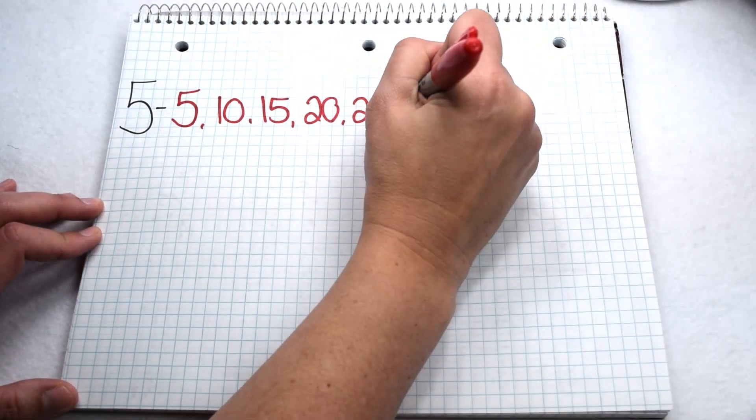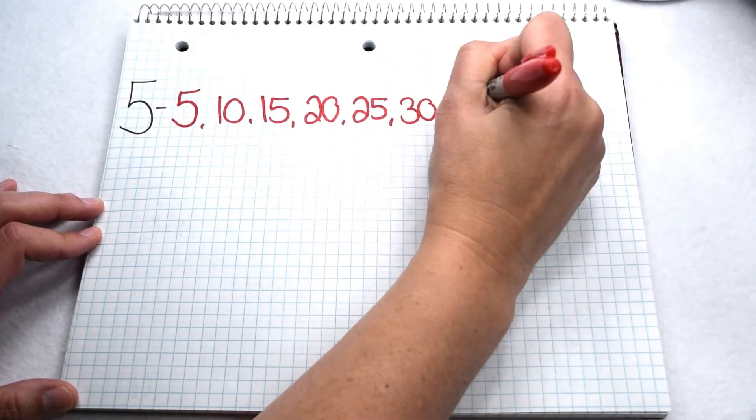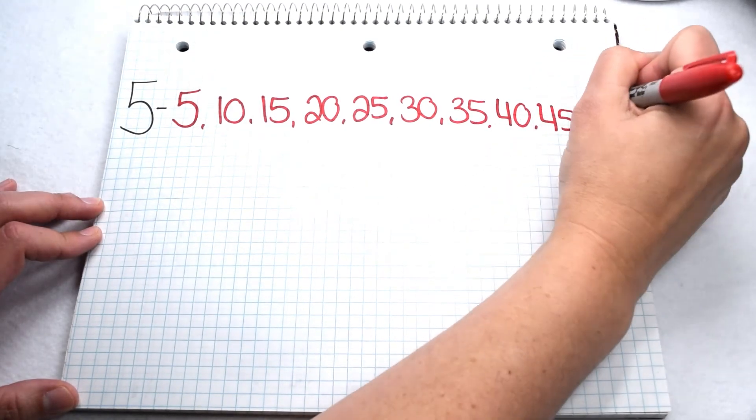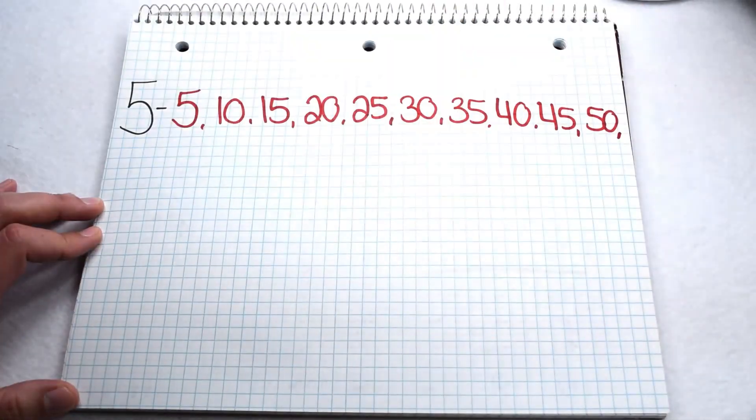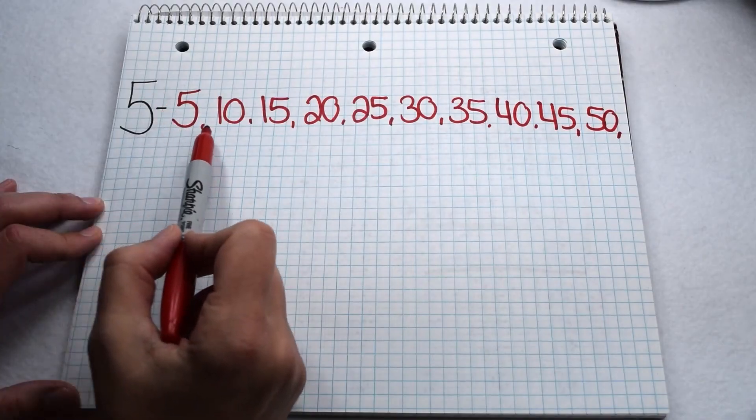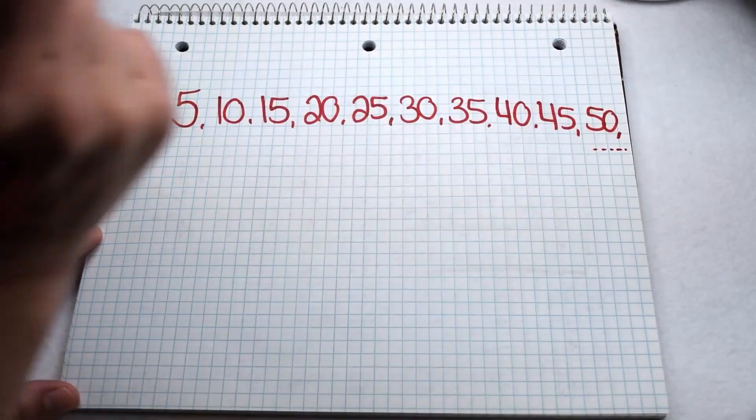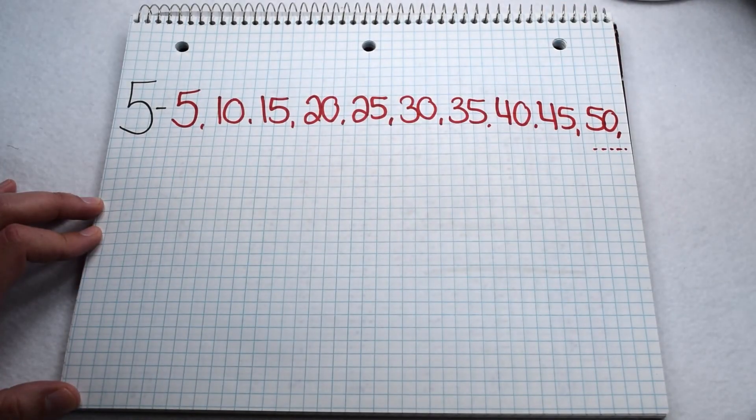From there, we could continue on to thirty, thirty-five, forty, forty-five, and fifty. Like we said before, multiples go on forever. So, however many multiples we need depends on what we are doing. If we needed to, we could go beyond fifty and add to our multiples list.